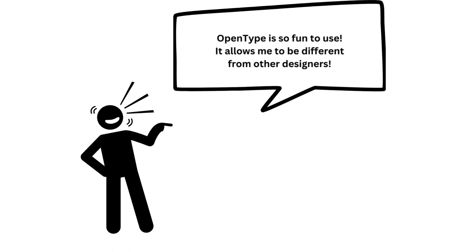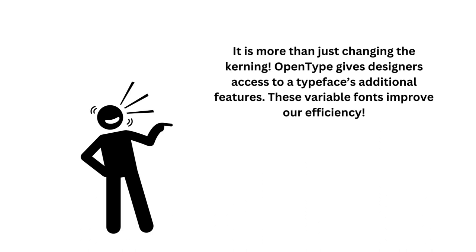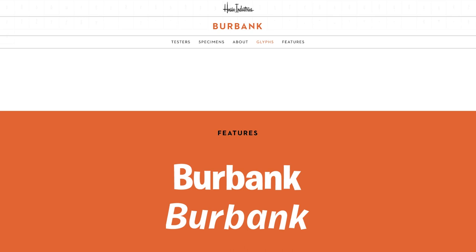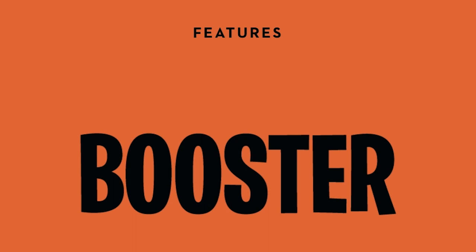OpenType is a font technology that gives users the ability to have access to extra features within a font. This was originally used for editing features such as kerning, but has recently expanded its ability to give users variations within a font, otherwise known as variable fonts. Burbank uses this ability to reduce shape repetition in its letters by providing alternate versions of the same letter, giving users its unique look. Designers can pick and choose which version of the letter they like the most, and as you can see in the attached example from House Industries' website, the heights of the O and the E can vary if need be.